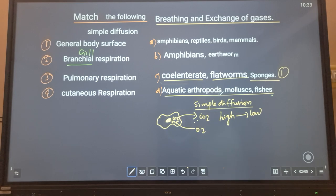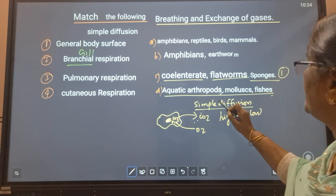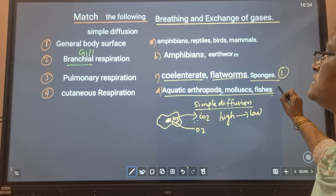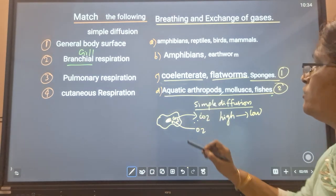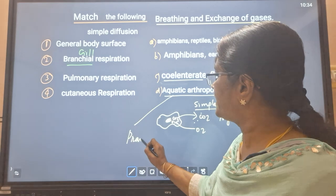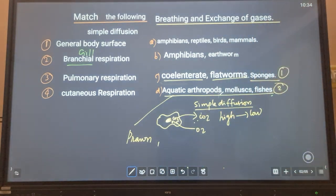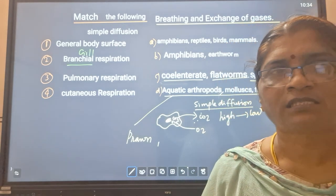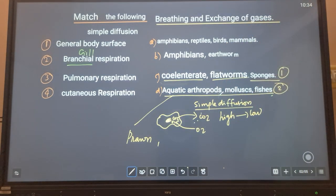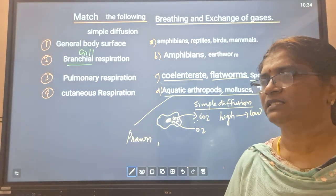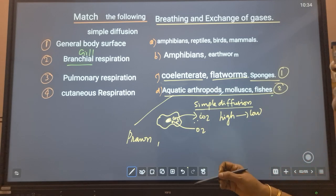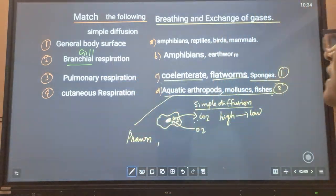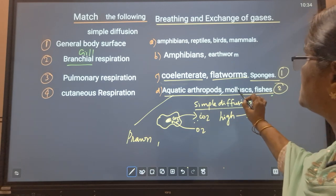Next, branchial respiration, also known as gill respiration. Gill respiration occurs in aquatic arthropods, mollusks, and fishes. In aquatic arthropods like prawns, and mollusks such as gastropod mollusks like snails and cephalopod mollusks, gills are the respiratory organs where exchange of CO2 and oxygen from water occurs, and also in fishes.